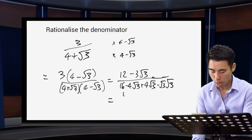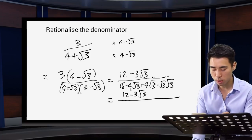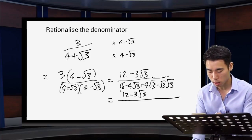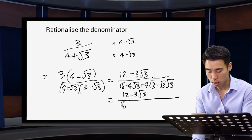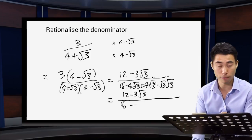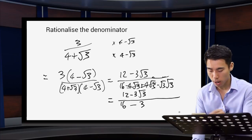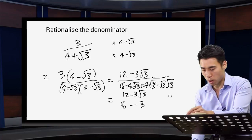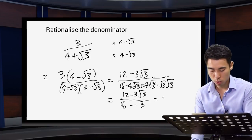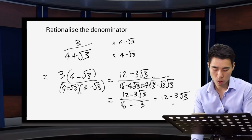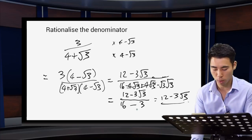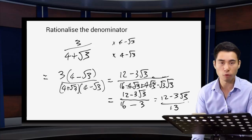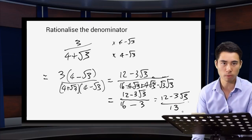The top stays the same — 12 minus 3 root 3. On the bottom: 16, and then minus 4 root 3 plus 4 root 3 cancel. We're left with minus root 3 times root 3, which is minus 3. So the bottom becomes 16 minus 3, which is 13. Final answer: 12 minus 3 root 3 all over 13. The denominator is now rationalised — there is no longer a surd on the bottom.